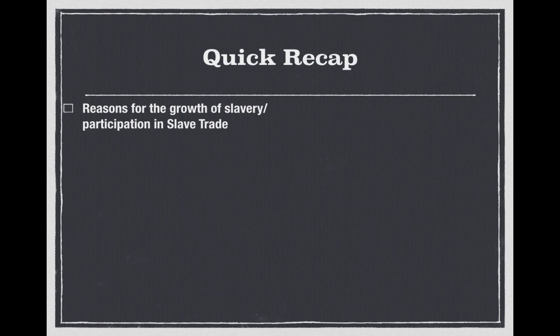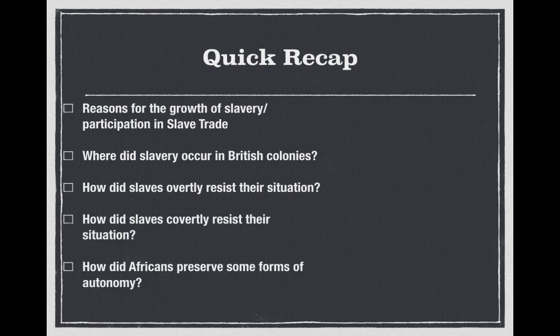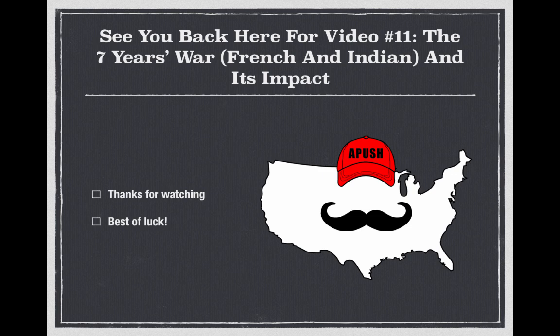Let's do a quick recap: reasons for the growth of slavery and participation in the slave trade; where slavery occurred in the British colonies; how slaves overtly resisted; how they covertly resisted; and how Africans preserved some forms of autonomy. That is it for period two — congratulations, you are done! Look forward to seeing you back for video number 11, the Seven Years War, also known as the French and Indian War, and its impact. Thank you for watching, best of luck, and have a good day.